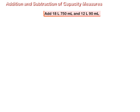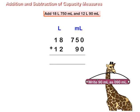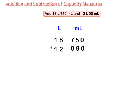Add 18 liters, 750 milliliters and 12 liters, 90 milliliters. Arrange the values of liters and milliliters in columns. Write 90 milliliters as 090 milliliters.